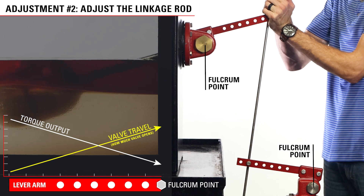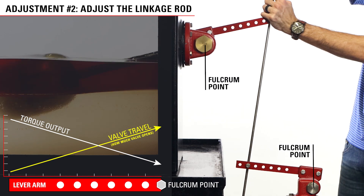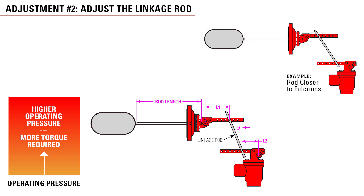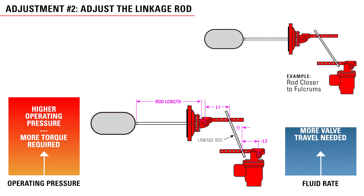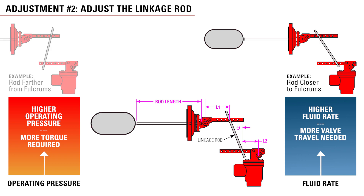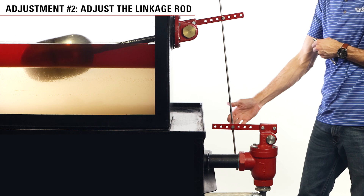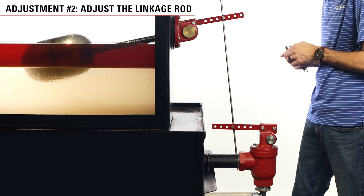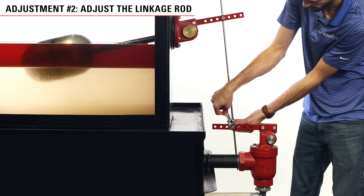This is a give and take between the valve torque and travel. The higher the operating pressure is, the more torque the valve will require to open against that pressure. The fluid rate will also determine if the valve needs to open further — if the valve is not able to evacuate the fluid fast enough, the valve travel will have to be increased. A good starting position would be in the middle of each lever arm, and from here you can make small adjustments to find what works best for your conditions.